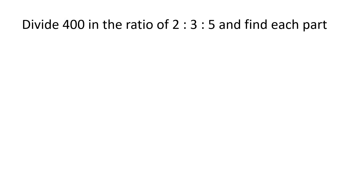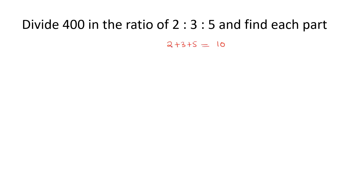Divide 400 in the ratio of 2:3:5 and find each part. This is a very basic question. We need to divide 400 in the given ratio of 2:3:5 and find each part. Here 2:3:5 — two similar things are involved in the ratio, and the summation of those three similar things is 400. If we take the terms of the ratio 2, 3, and 5, the summation of 2 plus 3 plus 5 is nothing but 10. But in the problem, the actual value of the summation of those three values is 400.